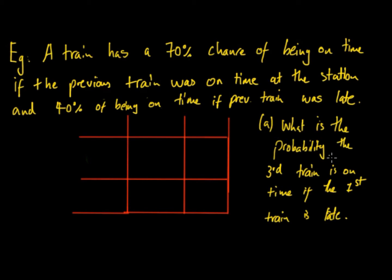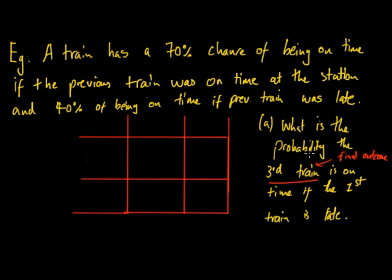Part A asks: what is the probability that the third train is on time if the first train is late? The key thing to realise is that we're only caring about the final train — the third train — not the middle ones. It's not asking for the probability of two trains being late, just the final outcome. That's how we know we can use transition matrices for this question.